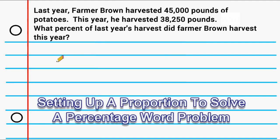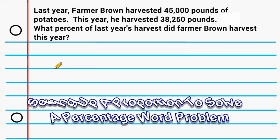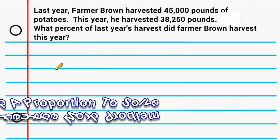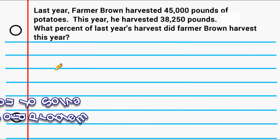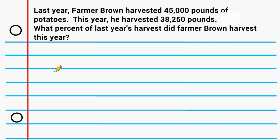We have a word problem here that is dealing with percentage. Let's read the word problem and determine what strategy we're going to use to solve it. The problem reads that last year Farmer Brown harvested 45,000 pounds of potatoes. This year he harvested 38,250 pounds. What percent of last year's harvest did Farmer Brown harvest this year?